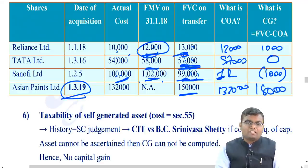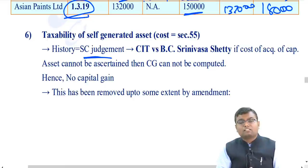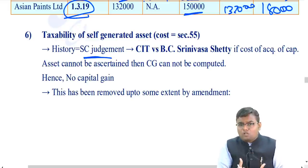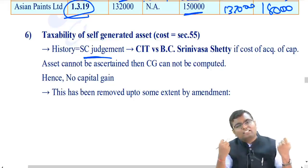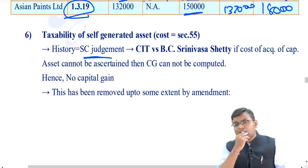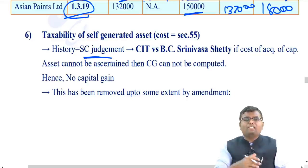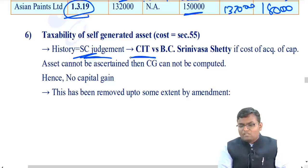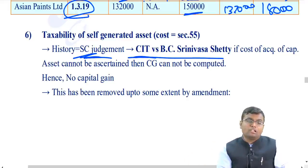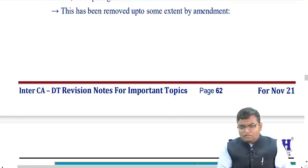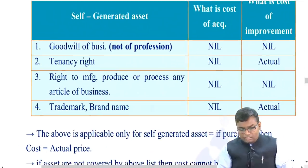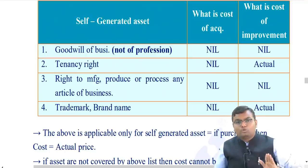An important Supreme Court judgment - CIT vs. B.C. Srinivasa Shetty - held that if the cost of acquisition cannot be determined (e.g., self-generated asset), capital gain cannot be computed and is not taxable. To partially reverse this, the government amended the law to provide that for certain assets, cost of acquisition will be taken as zero even though it cannot be ascertained.